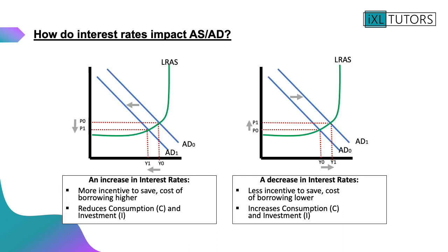Now we're going to look at how interest rates impact aggregate supply and aggregate demand. On the left you have an AS/AD diagram that shows what happens when there is an increase in interest rates. An increase in interest rates creates more of an incentive for consumers and businesses to save and makes the cost of borrowing higher. Due to that, it reduces consumption and investment, causing aggregate demand to fall and shift left from AD0 to AD1.